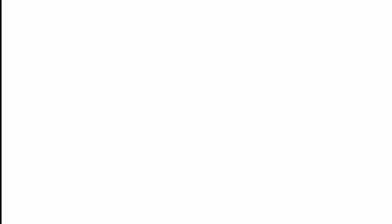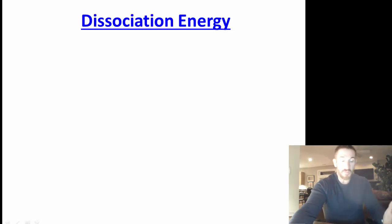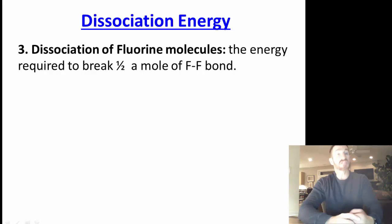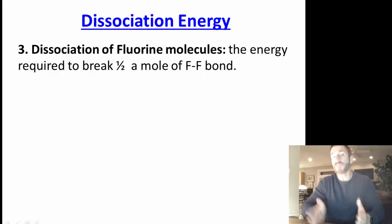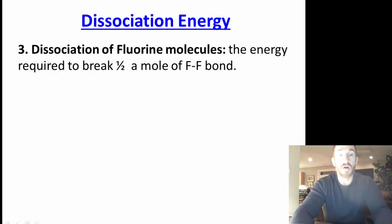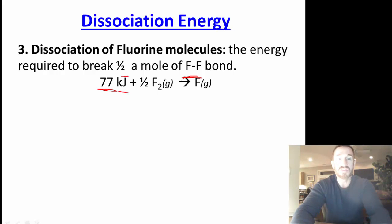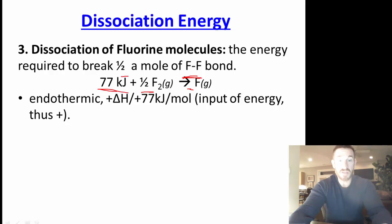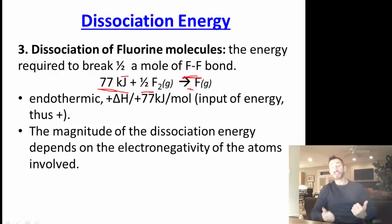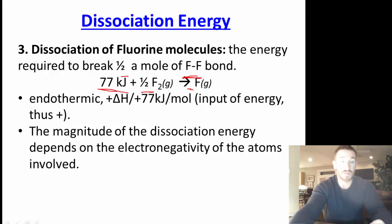Number three is dissociation energy. Now we look at the non-metal — diatomic fluorine gas. Fluorine is dissociated from fluorine molecules into single fluorine atoms. We start with half a mole of diatomic fluorine to get one mole of fluorine atoms. The energy required is 77 kilojoules — energy is a reactant, so it is an endothermic process with a positive delta H of +77 kilojoules per mole. The magnitude of dissociation energy depends on the electronegativity of the atoms involved.